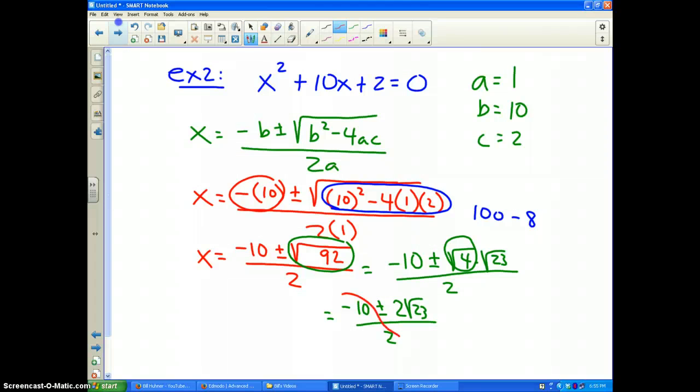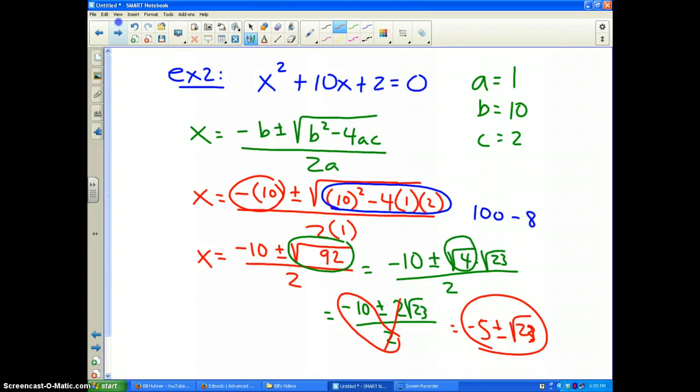Well, let's make our life easy. Let's just do this in one step. Negative 10 divided by 2 is equal to negative 5 plus or minus, and 2 divided by 2 cancels out, and I'm left with the square root of 23. And now you could also break that apart if you wanted to, so it would be negative 5 plus the square root of 23, and negative 5 minus the square root of 23.